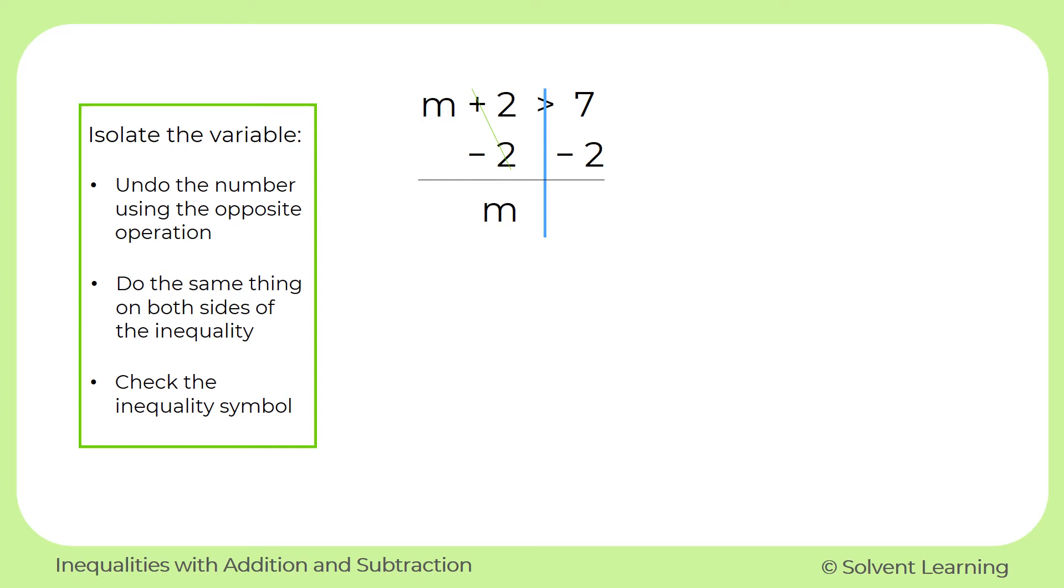So on the left side, I have just m left by itself, which is what we wanted. On the right side, I have 7 minus 2. And that simplifies to 5. And now my last step is to bring down the inequality symbol in the middle. So the solution that we have here is m is greater than 5.